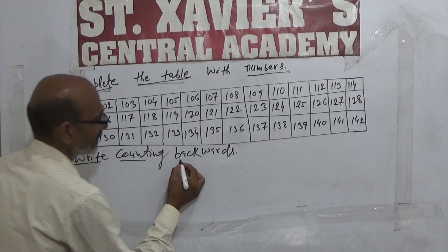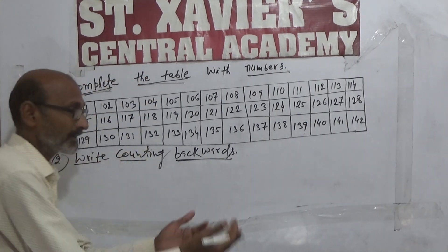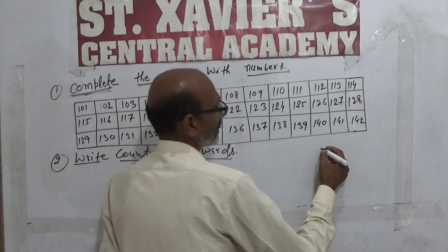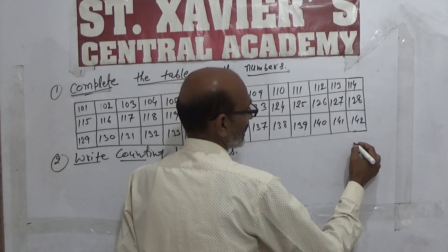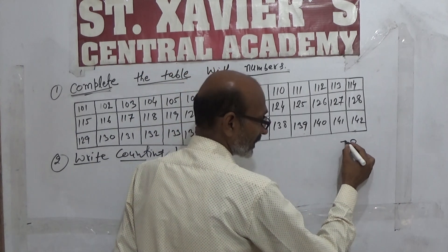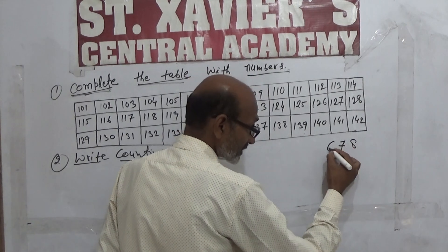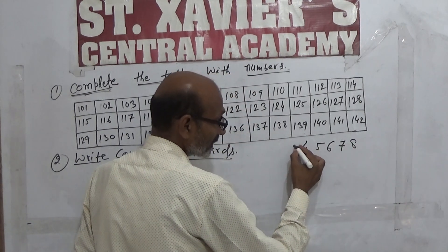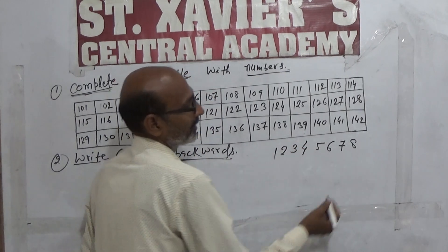Right counting backwards — backwards का मतलब पीछे की तरफ। जैसे आप number लिख रहे हो: eight — तो backward हो गया — seven, six, five, four, three, two, one।